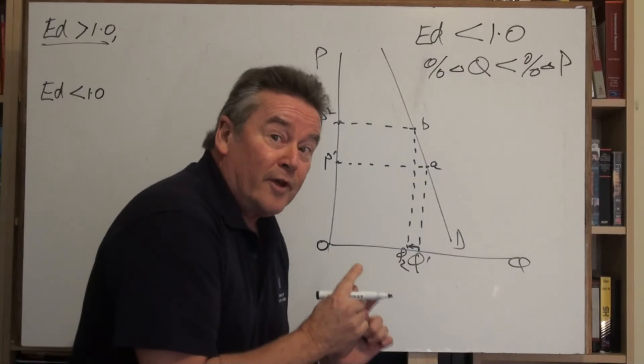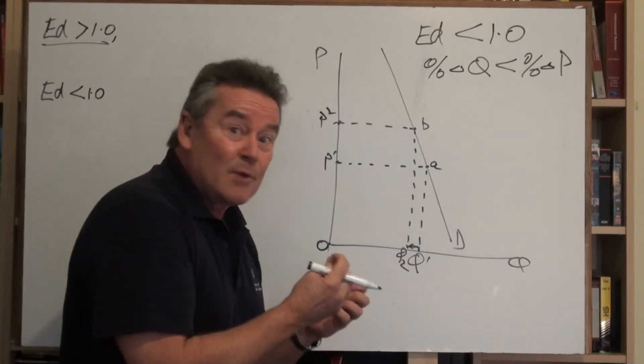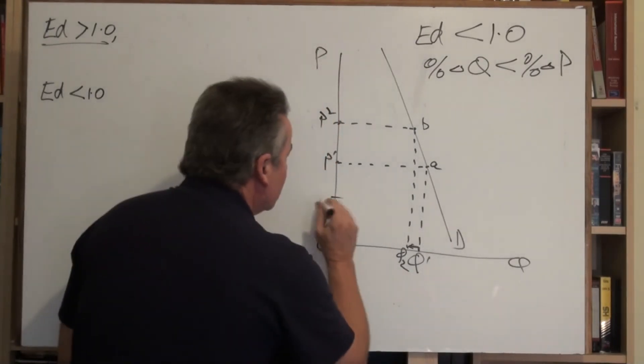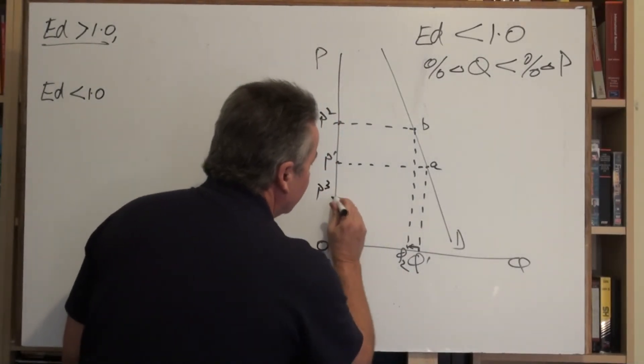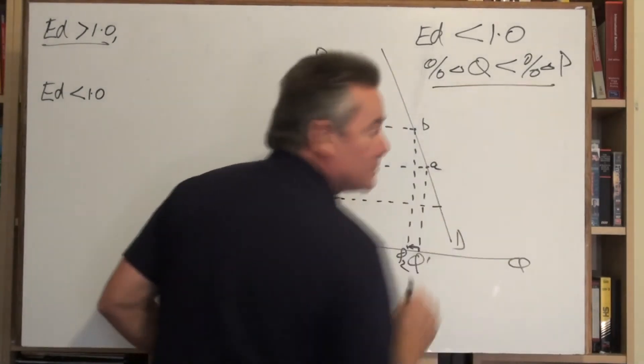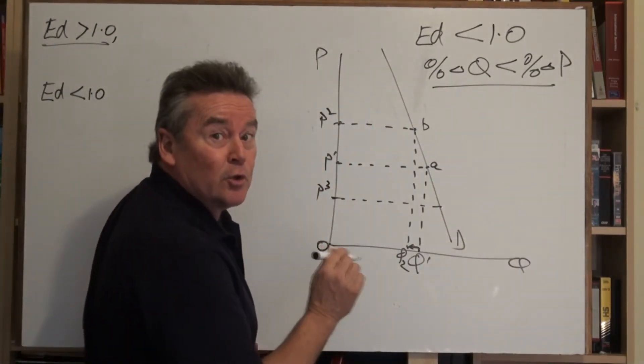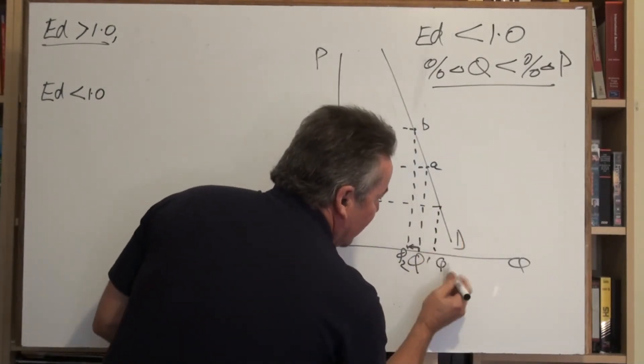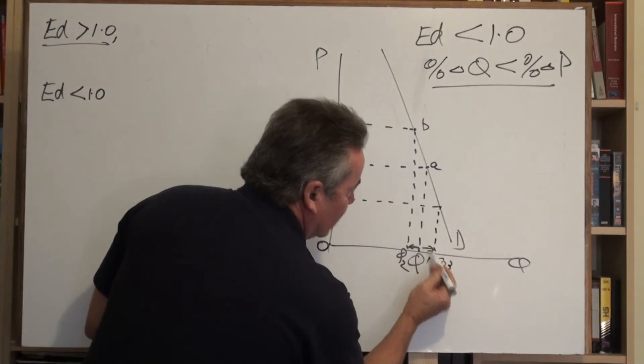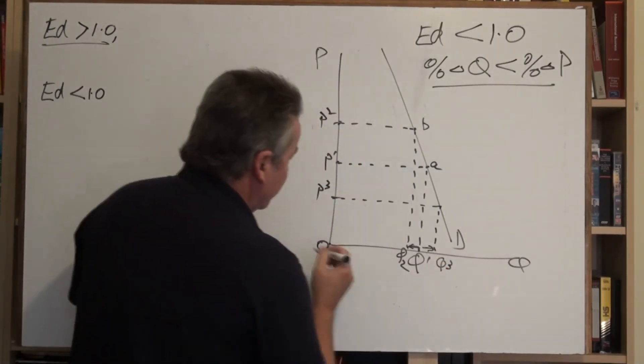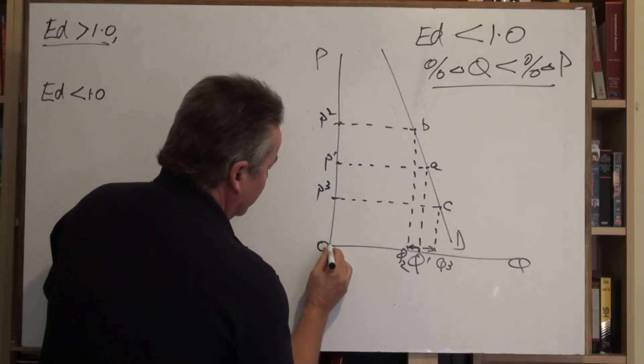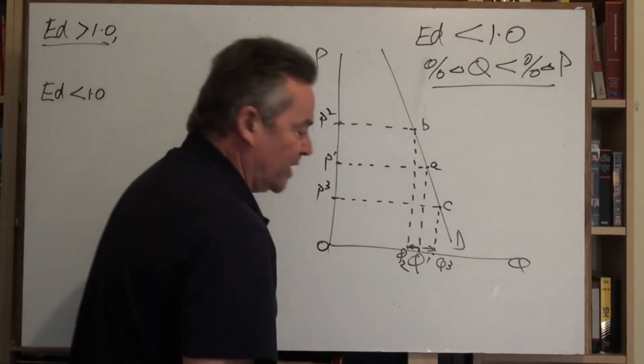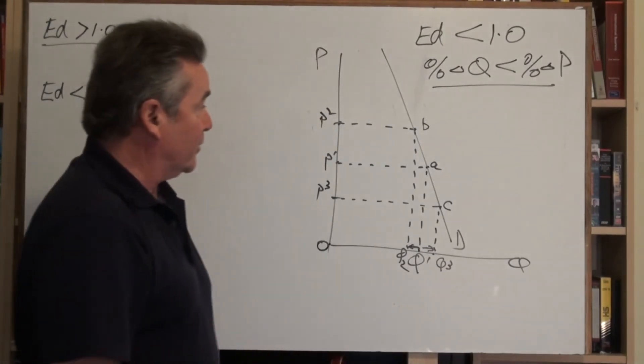Now, contrary to what we found when price elasticity of demand was price elastic, a price fall here, bad news. Drop the price to P3. Again, guess what? The percent change in Q is less than the percent change in P. In this particular instance, the gain in sales is also not very great. So here we have a situation where 0, P3, C, Q3 yields a very low level of total revenue.